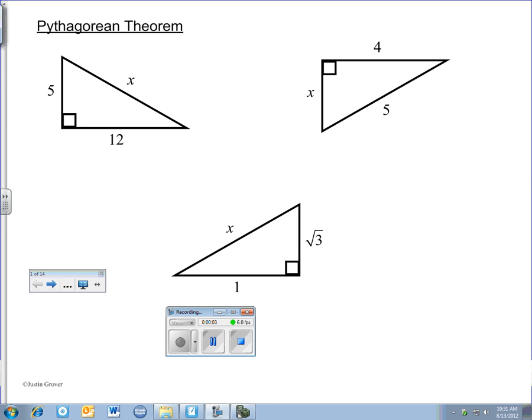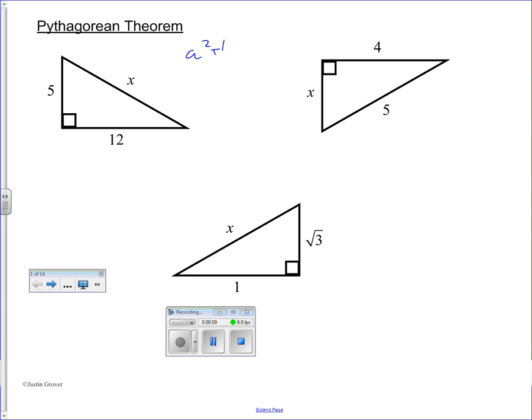Most students learn the Pythagorean Theorem as a squared plus b squared equals c squared. Where if, say, this were a, b, and c, the capital letters are for angles, lowercase letters are the sides opposite that.